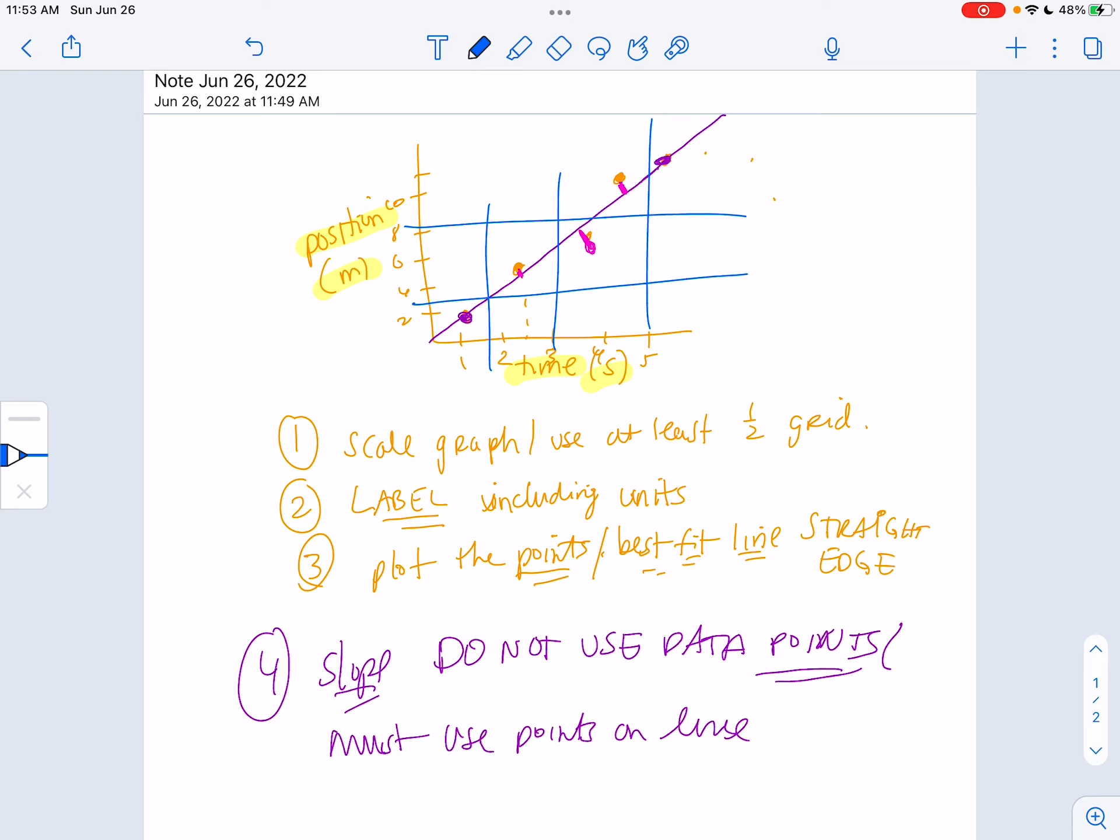So, what you'll do is you'll have your grid or whatever, and then you'll probably find two points that are on the line. I would do this and circle them, all right, so that it's super clear. Maybe even put the coordinate point when you calculate the slope so it's super clear to the reader what you're doing. Do not use data points, even if they're on the line. I can't stress that enough.